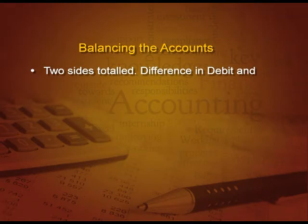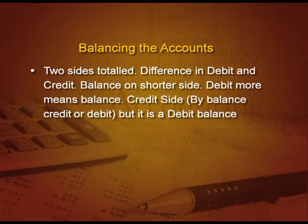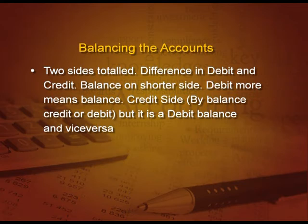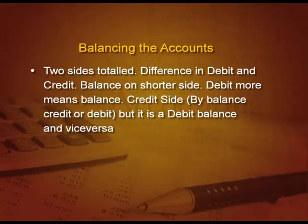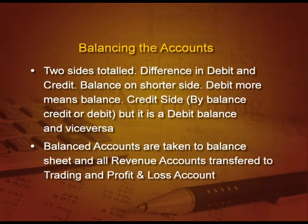The last topic in this section is balancing the accounts. The two sides — debit and credit — are totaled. Then we find the difference, whether it is on the debit or credit side. The balance is placed on the shorter side as balance carried down. If debit is more, the balance goes on the credit side, but it is a debit balance. If the credit side is more, the balance goes on the debit side, but it is a credit balance. These balanced accounts are taken to the balance sheet, and all revenue accounts are transferred to trading and profit and loss account.